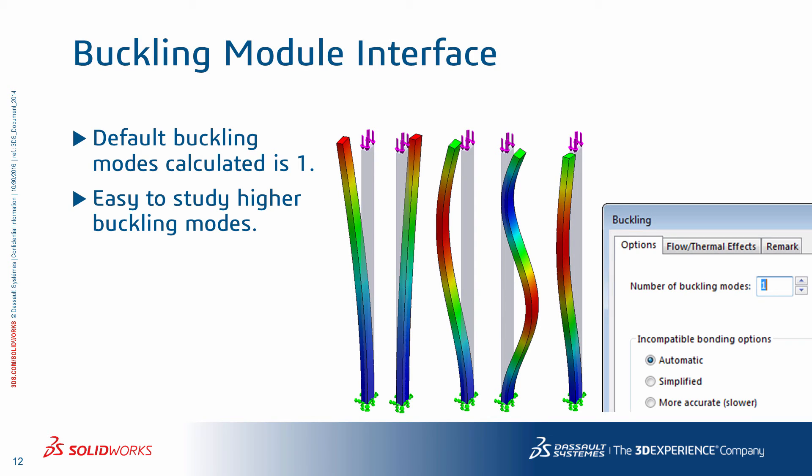In the SOLIDWORKS Simulation buckling module, the default buckling mode calculated is just one — namely the lowest factor. The user can easily increase that under the properties of the study. You see here five modes: simple out-of-plane bending in the weaker and stronger planes as modes 1 and 2, and higher curvatures in those planes for modes 3 to 5.